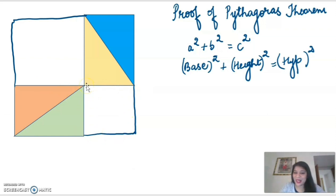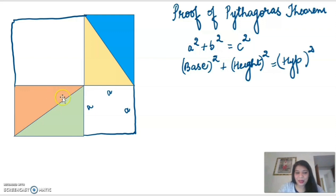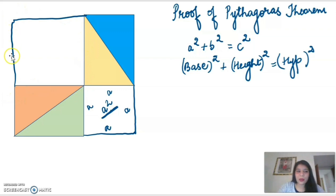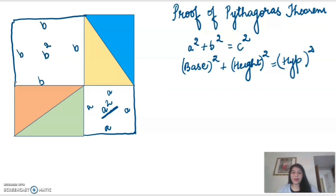Now what is going to be the area of this square? The area of this square is going to be a squared, because this side is exactly parallel to this side and this side is exactly parallel to this side — so it is a square with side length a centimeter. In the similar manner, the area of this other square is going to be equal to b squared, because each of its sides is b.